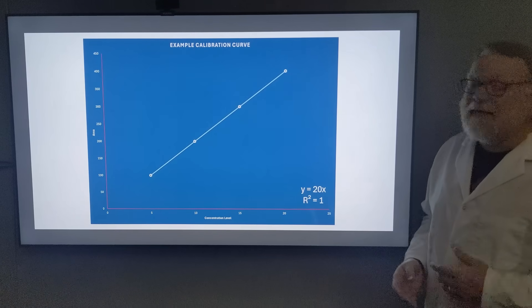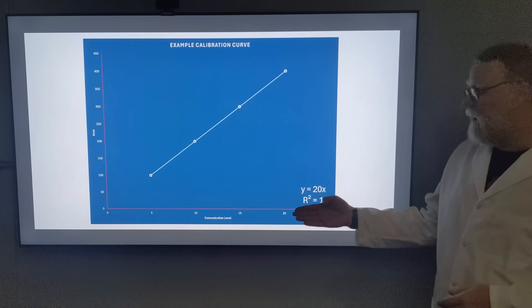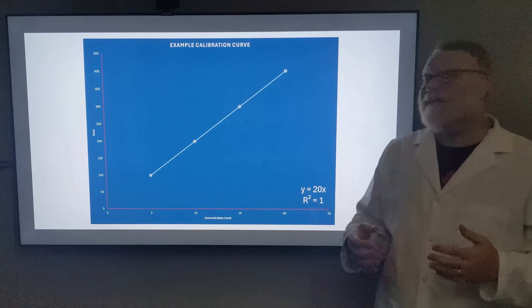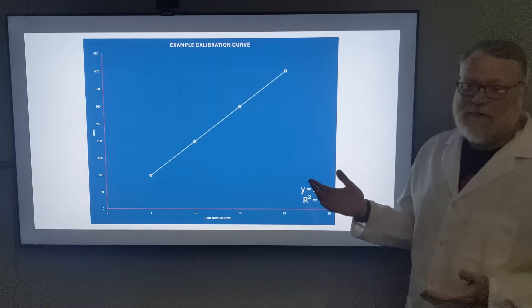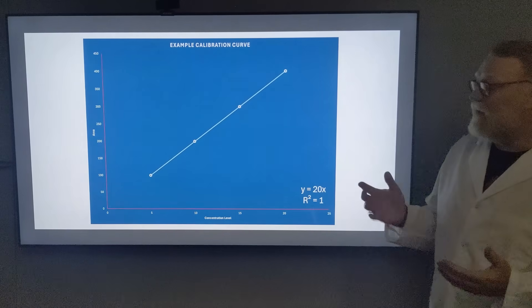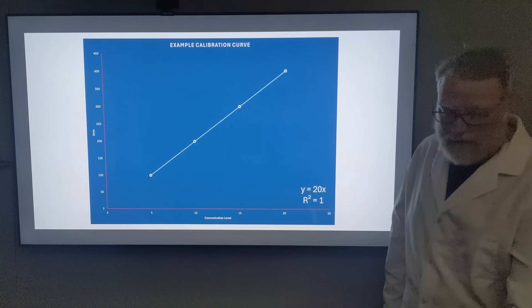It's also going to give us an r-squared value. R-squared in this case is 1. What is r-squared? It tells us how close we are to a perfect line. In this case it's a perfect line in a perfect world, so we get perfect results. That doesn't happen in the real world, so we're going to look at real world examples.